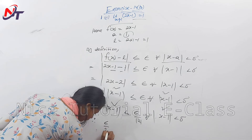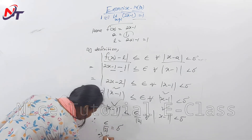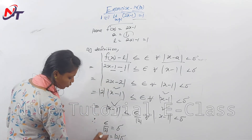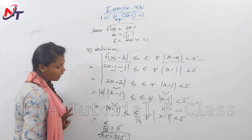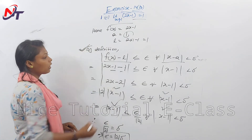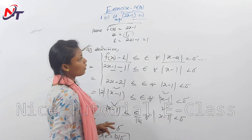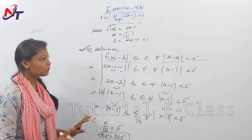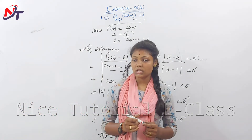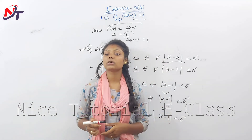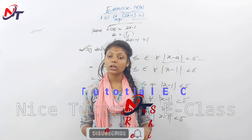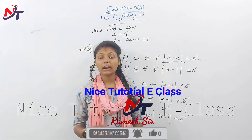Therefore ε/2 = δ, which implies ε = 2δ. This proves the epsilon-delta definition: the limit as x → 1 of f(x) equals 1. Class time for exercise 14b — questions 1 and 2 are complete. We will start the next question in the next class.